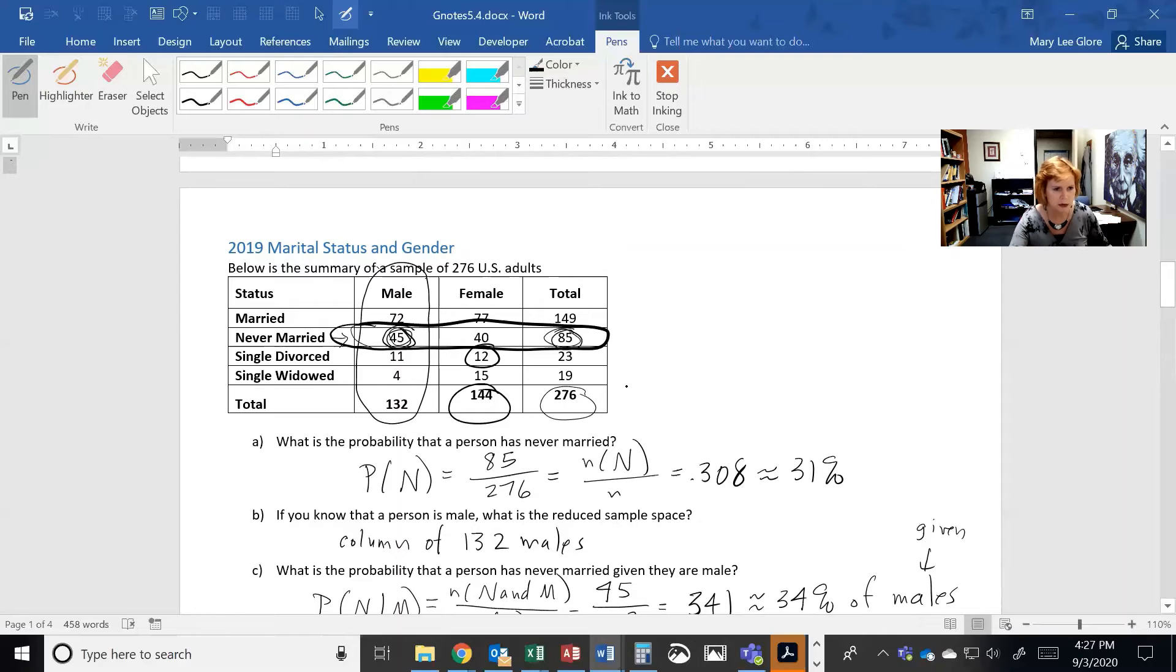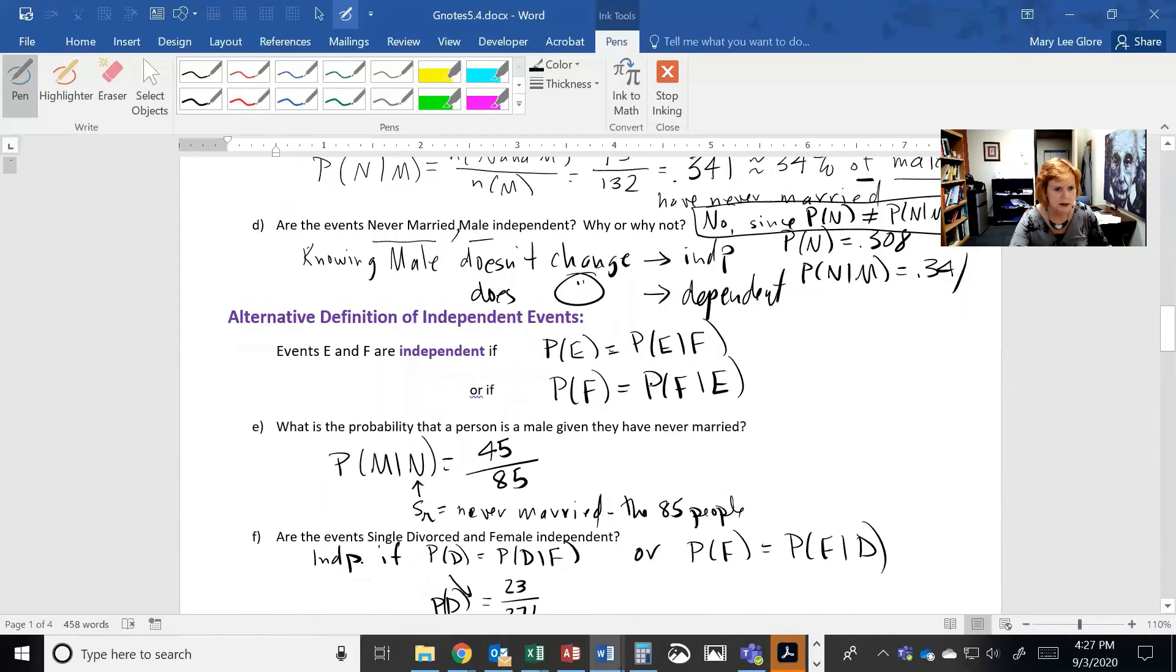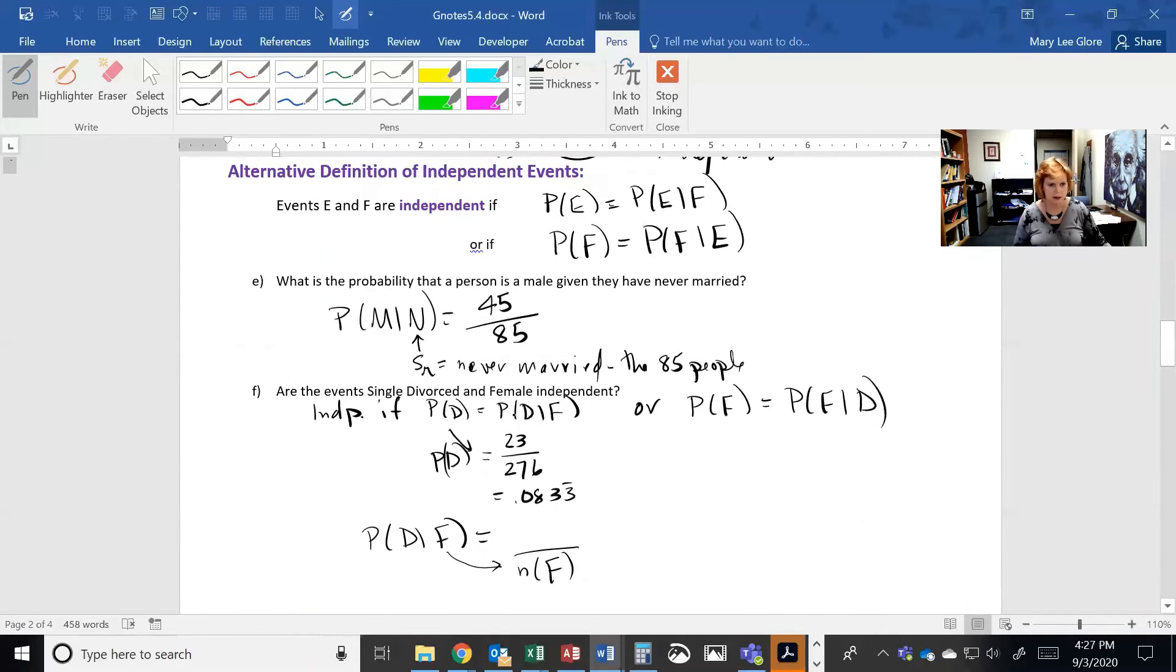This is going to be the number that are divorced and female, which was the 12 people. So that's one twelfth, and this is also 0.0833.